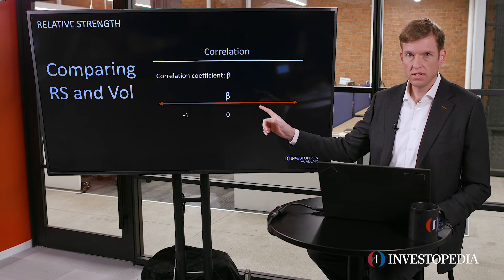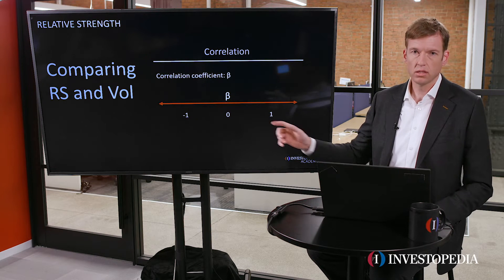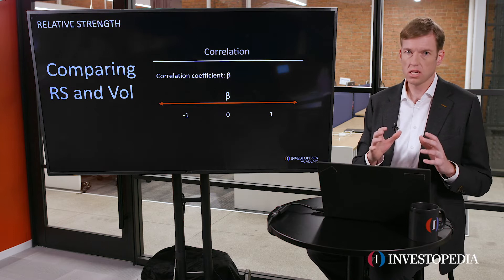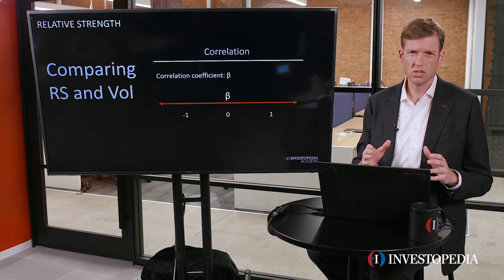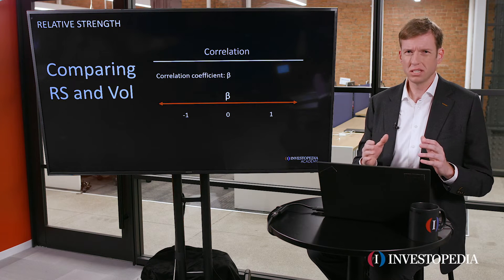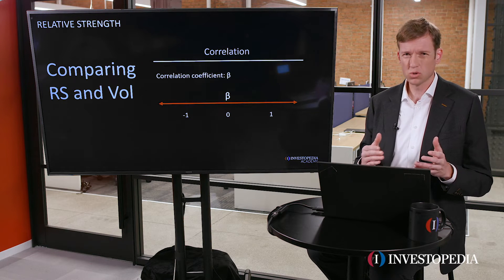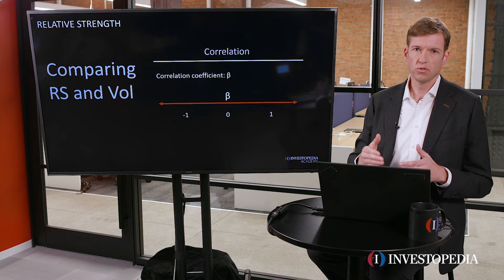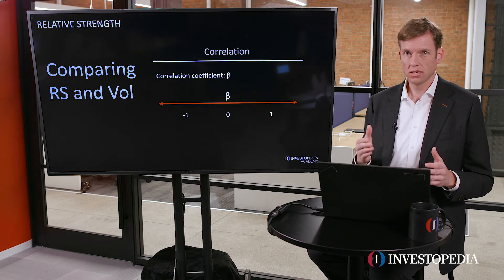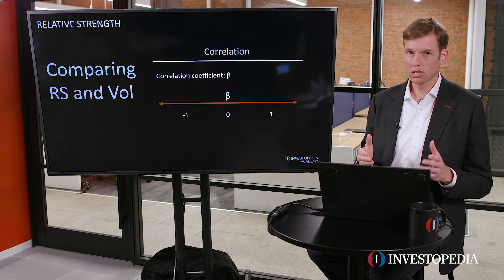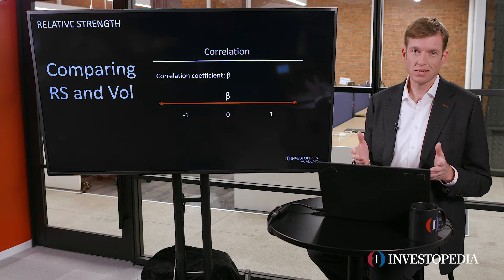By the same token, it doesn't necessarily follow the index lower either. If a stock had a beta of negative one, that tells us the stock is inversely correlated to the S&P 500 — it's not going to look exactly like a mirror image of the index, but it will basically move down most often when the index is moving up, and may move up when the index is moving down. Having a group of stocks like that could be a great addition to a diversification strategy.